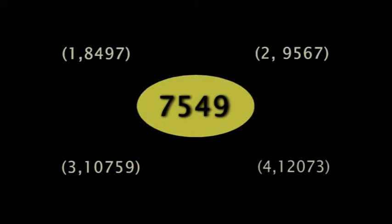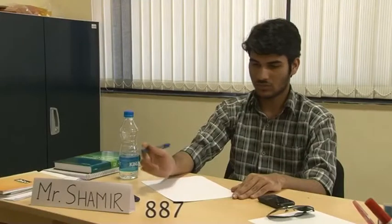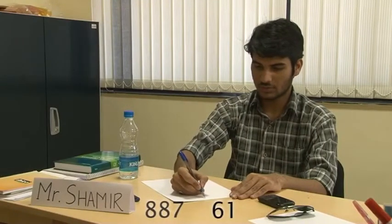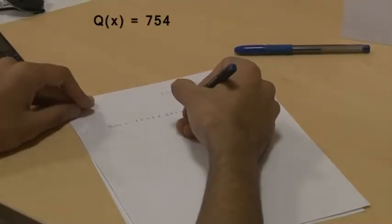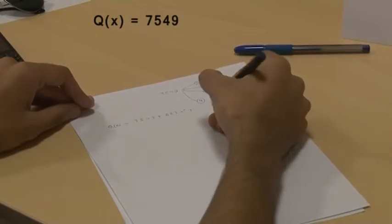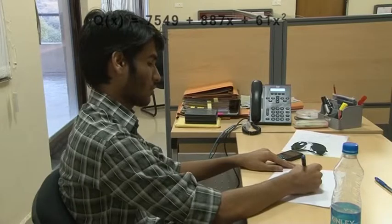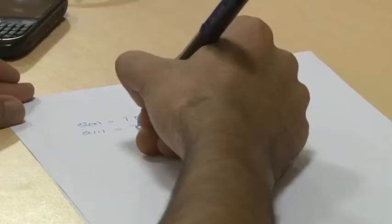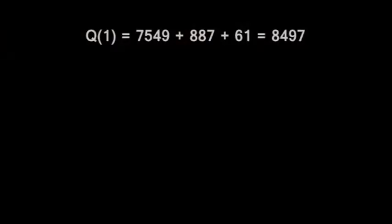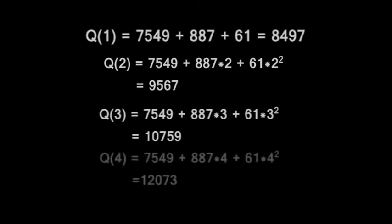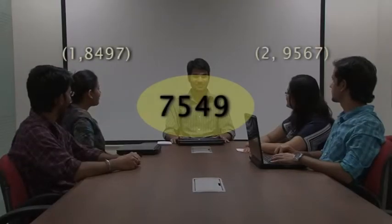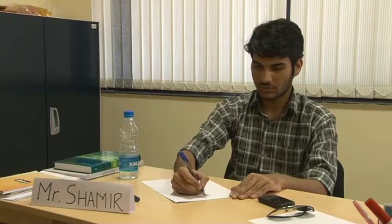How do these phone numbers relate to the actual password of the safe? Here lies the secret. The password of the safe was 7549. Shamir chose two random numbers, 887 and 61, and constructed a 2-degree polynomial equation Q(x). He gives different values to x. Shamir knew that to construct a unique 2-degree equation, three solutions are required.